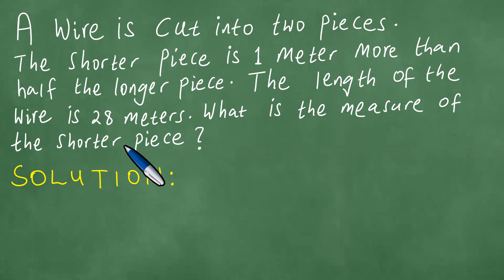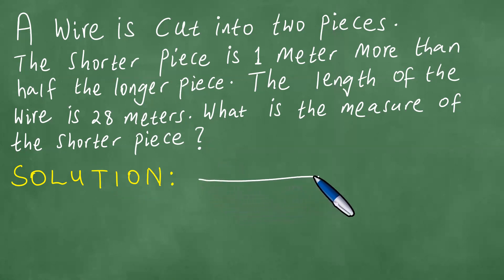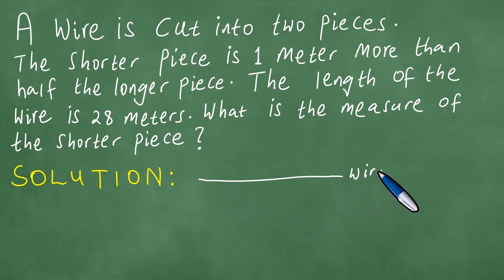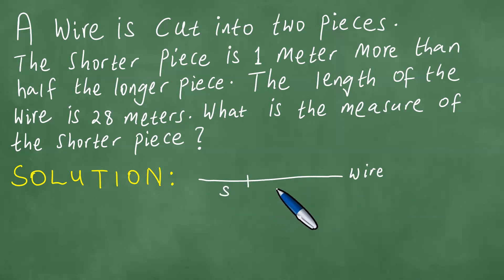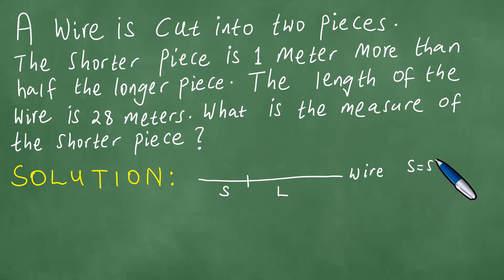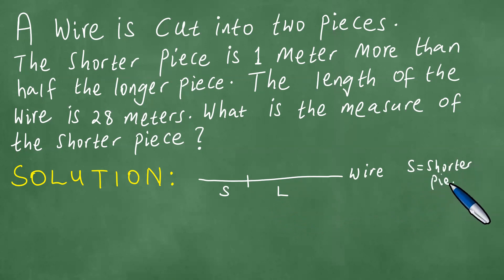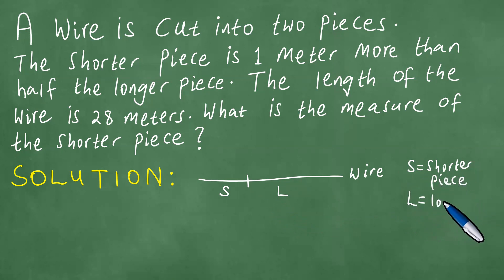We can picture the situation and have a sort of sketch of the wire that is cut. The shorter piece is called S, which means the shorter piece, and you have L, which means the longer piece.